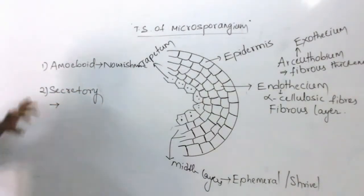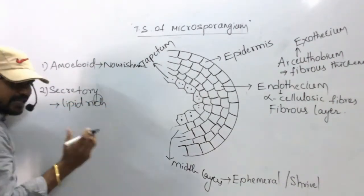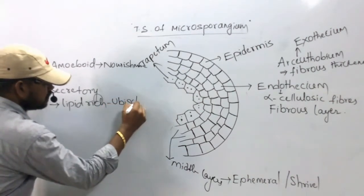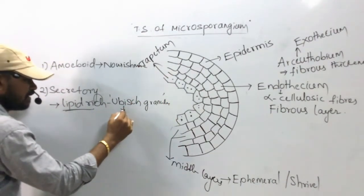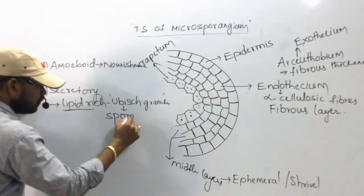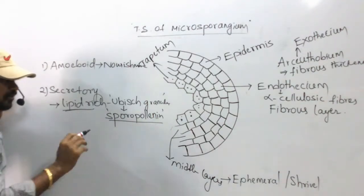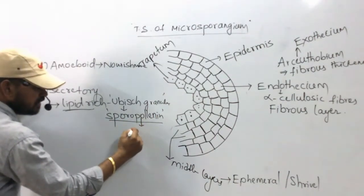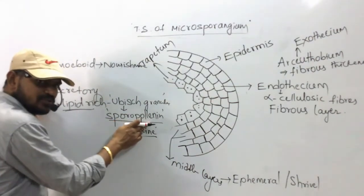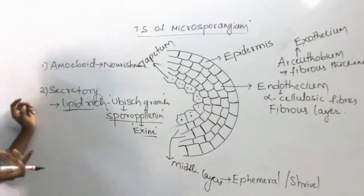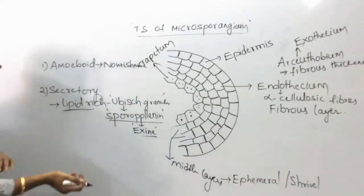Secretary tapetum secretes substances including lipid-rich granules called ubisch granules, which are made up of sporopollenin. Sporopollenin is one of the hardest or toughest materials in nature — no enzyme can degrade it. It is involved in the formation of the exine of the pollen grain, allowing pollen grains to be preserved as microfossils.